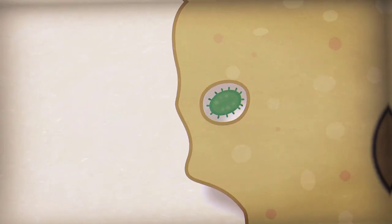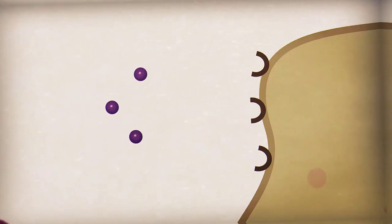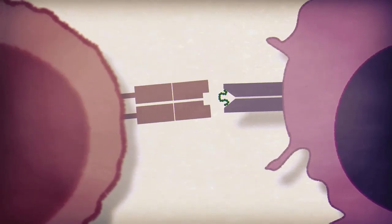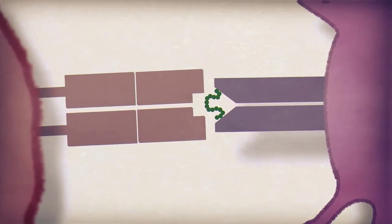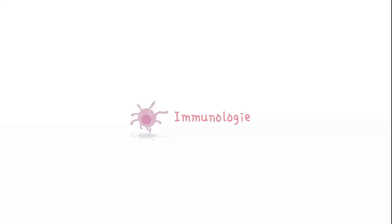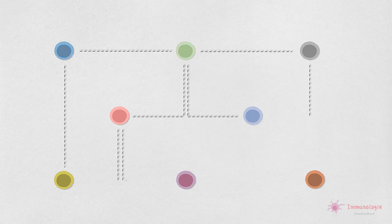Hello, everyone. Introduction aux cytokines. Les cellules du système immunitaire sont réparties dans tout le corps et ont besoin d'un système de communication pour coordonner une réponse efficace.